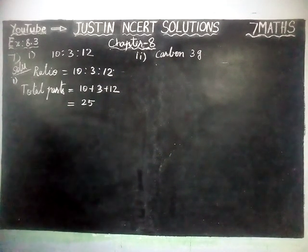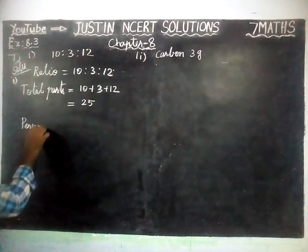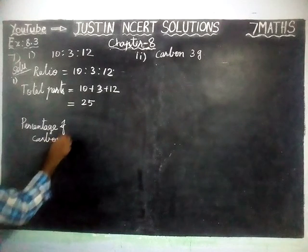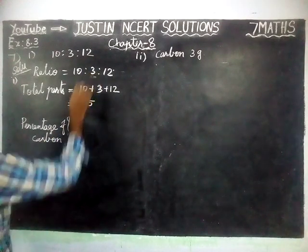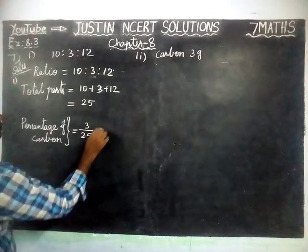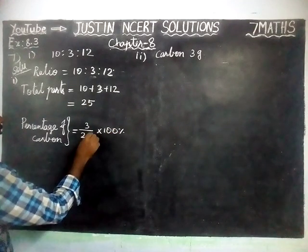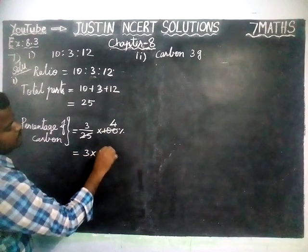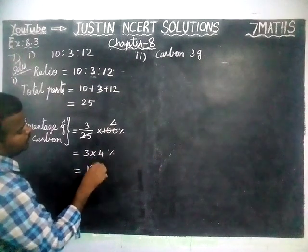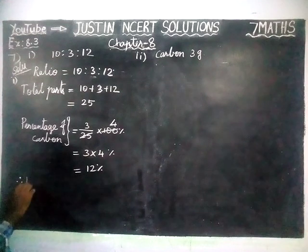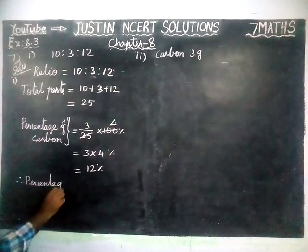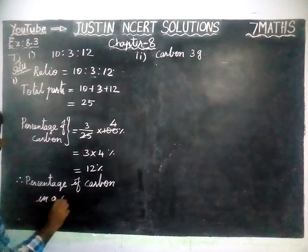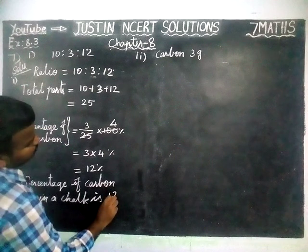We are going to find the percentage of carbon. Percentage of carbon is equal to 3 divided by total parts 25, into 100 percent. 4 twenty-fives are 100, so 3 into 4 percent is equal to 12 percent. Therefore, percentage of carbon in chalk is 12 percent.